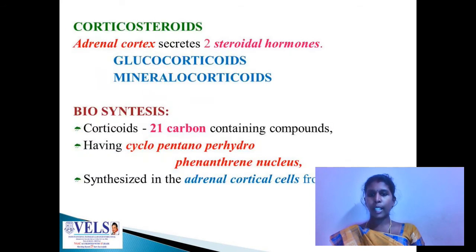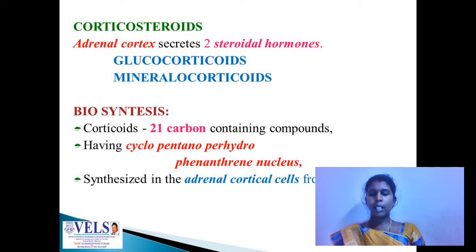Coming to the chemistry of corticosteroids, the adrenal cortex secretes two steroidal hormones: glucocorticoids and mineralocorticoids. They are biosynthesized with the help of cholesterol in adrenal cortical cells. The corticoids have 21 carbon atoms and have a cyclopentano-perhydrophenanthrene nucleus.